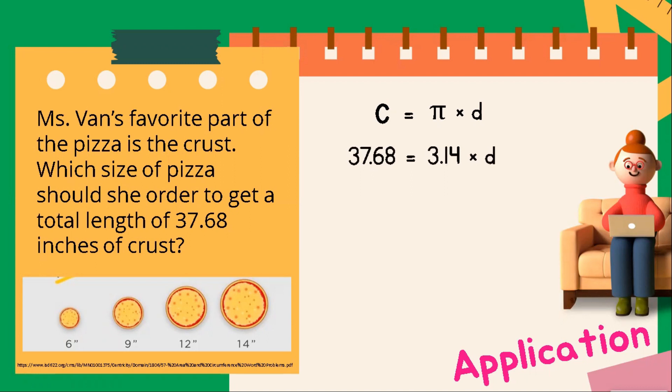Let's now substitute our formula by the given data. We have 37.68, which is the supposed to be total length of the pizza that she needs to order. This is equal to 3.14, which is the value of the pi, times the diameter, which is still unknown.